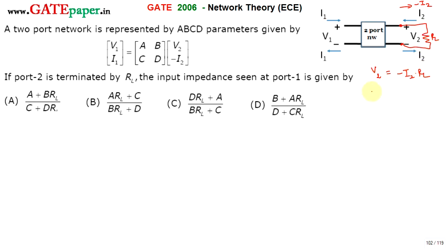Next, from this ABCD parameter relationship, you can write V1 is equal to AV2 minus BI2, and I1 is equal to CV2 minus DI2. These are the equations.